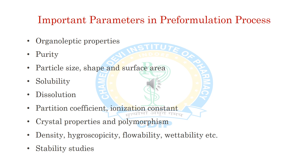Now, the important parameters in the pre-formulation process which we usually perform with a new drug molecule are: first, organoleptic properties; second, purity of the drug compound; third, particle size, shape, and surface area of the drug; fourth, solubility of the drug with different organic and inorganic solvents; fifth, dissolution profile; sixth, partition coefficient and ionization constant; seventh, crystal properties and polymorphism; eighth, density, hygroscopicity, flowability, wettability, etc.; and finally, stability studies.